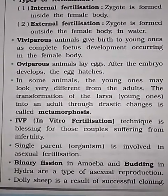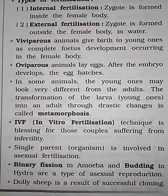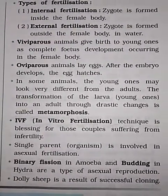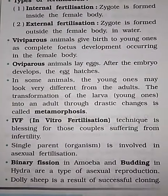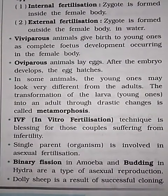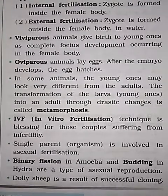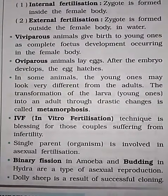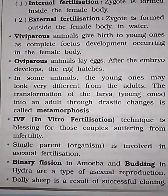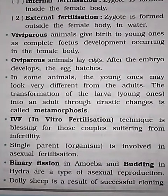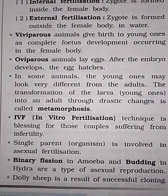In asexual reproduction, only one parent organism is involved. Binary fission occurs in amoeba and budding occurs in hydra — both are types of asexual reproduction.